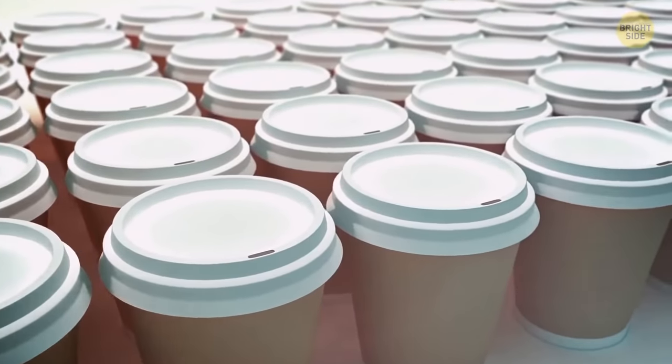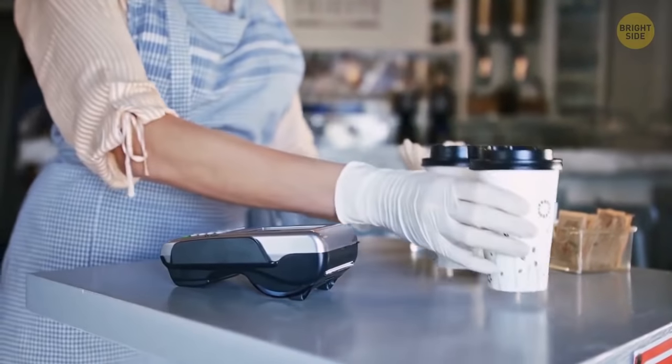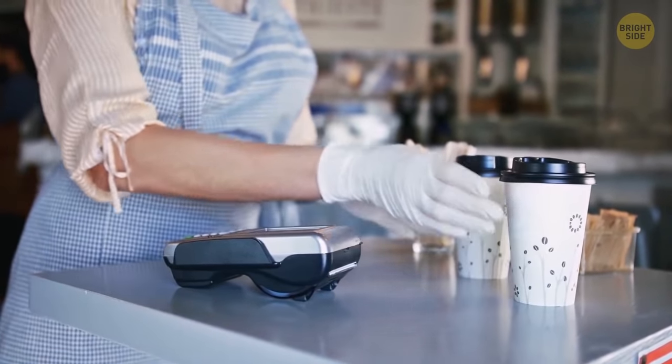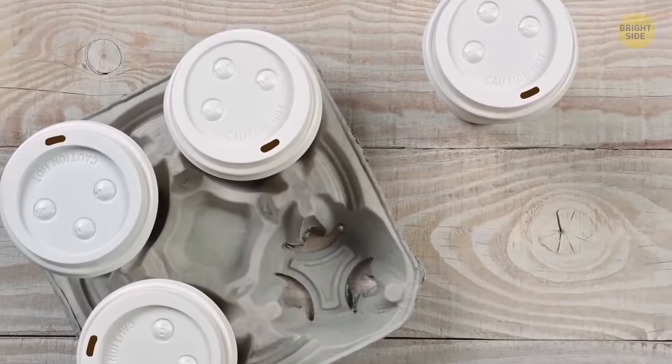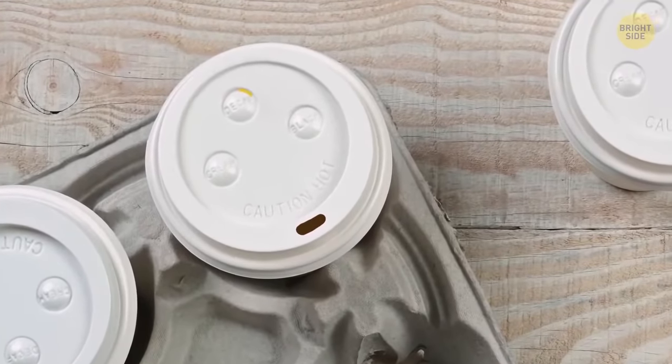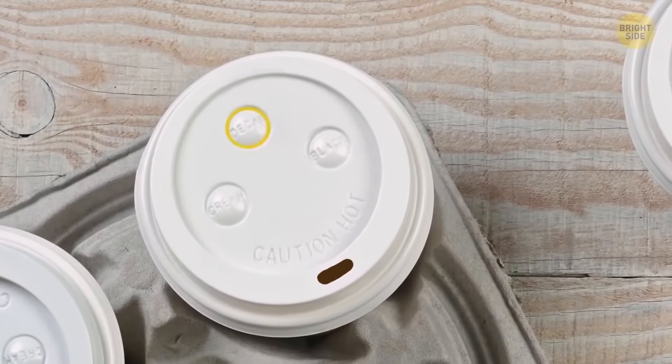The small button on beverage lids let restaurant workers, and customers too, understand what's in a cup. Near each button, there's a name. Just look at which one is pushed down.